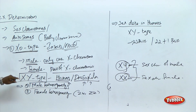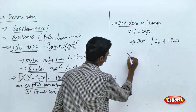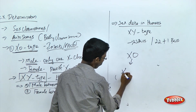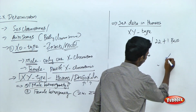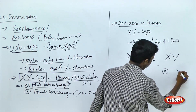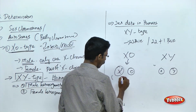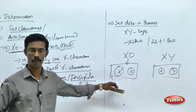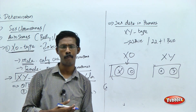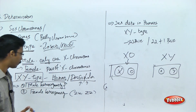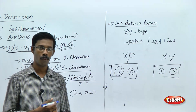In both the XO type and XY type, we observe male heterogamety. The male produces heterogeneous gametes — carrying X or not (in XO), or carrying X or Y (in XY). In Drosophila, there is a 50% possibility in gamete formation of X or Y. This kind of heterogeneity produced by the male during gamete formation is called male heterogamety, observed in Drosophila and most insects. In birds, however, we observe female heterogamety.